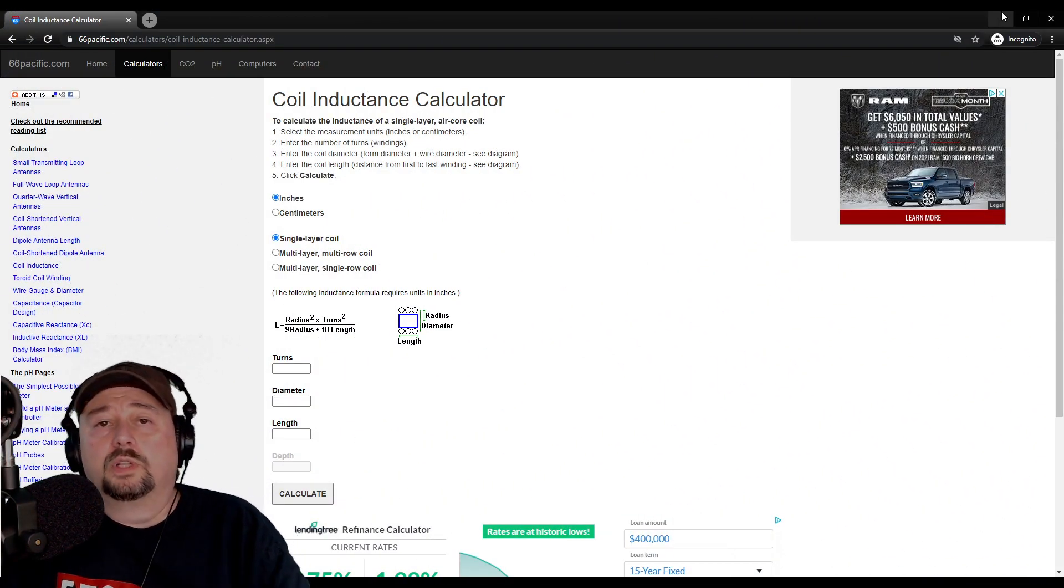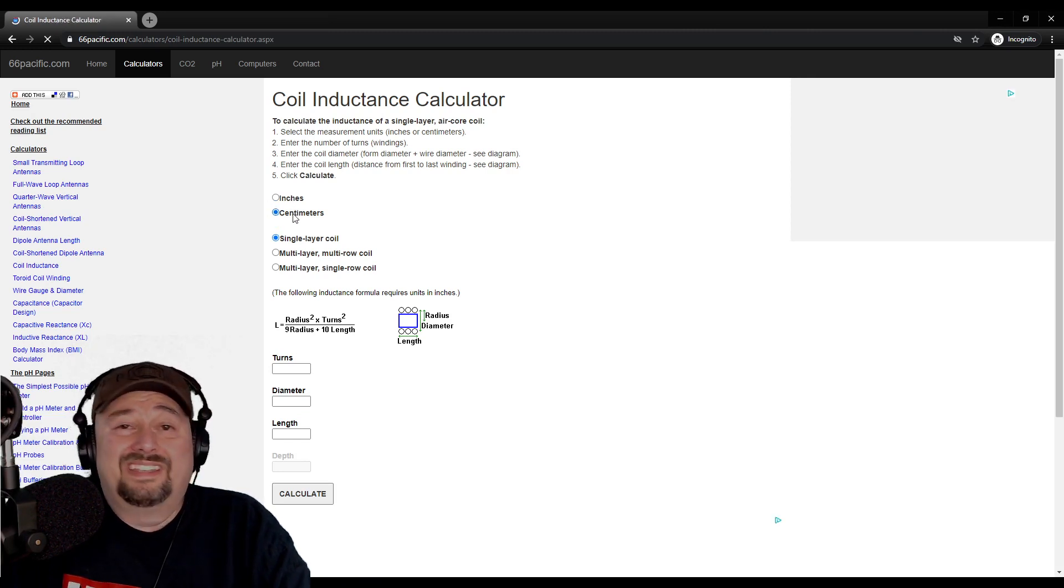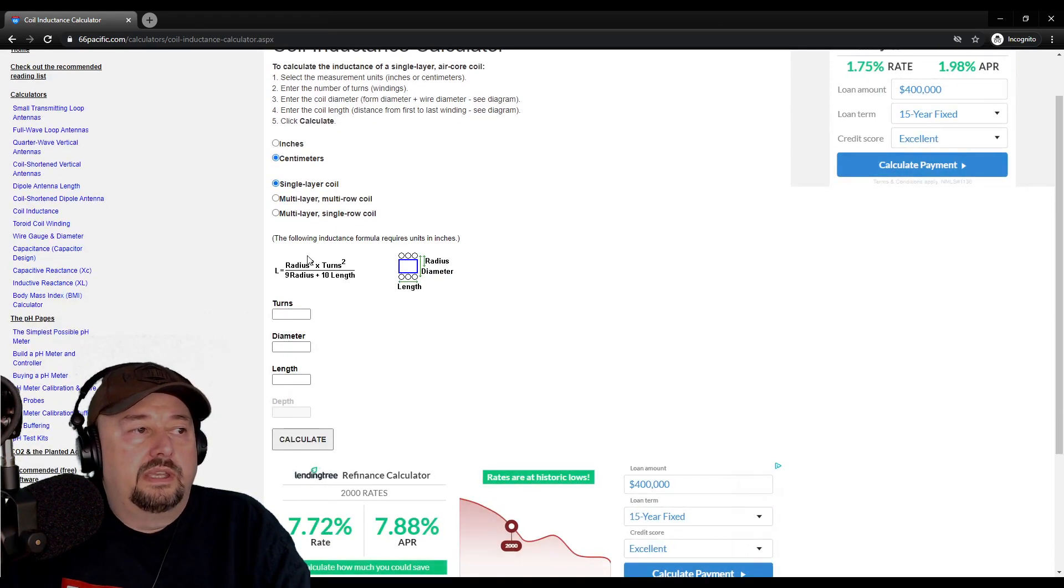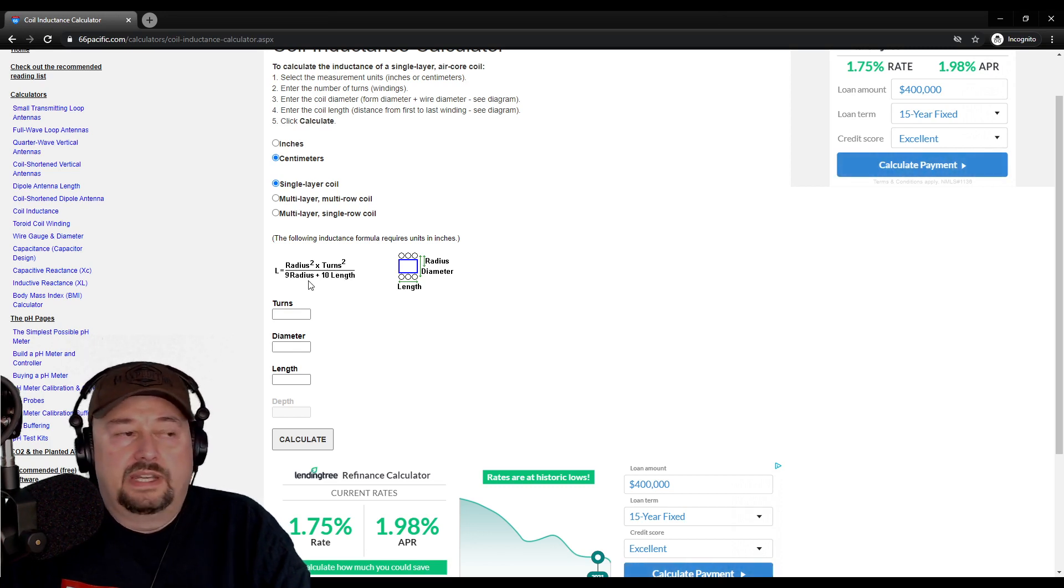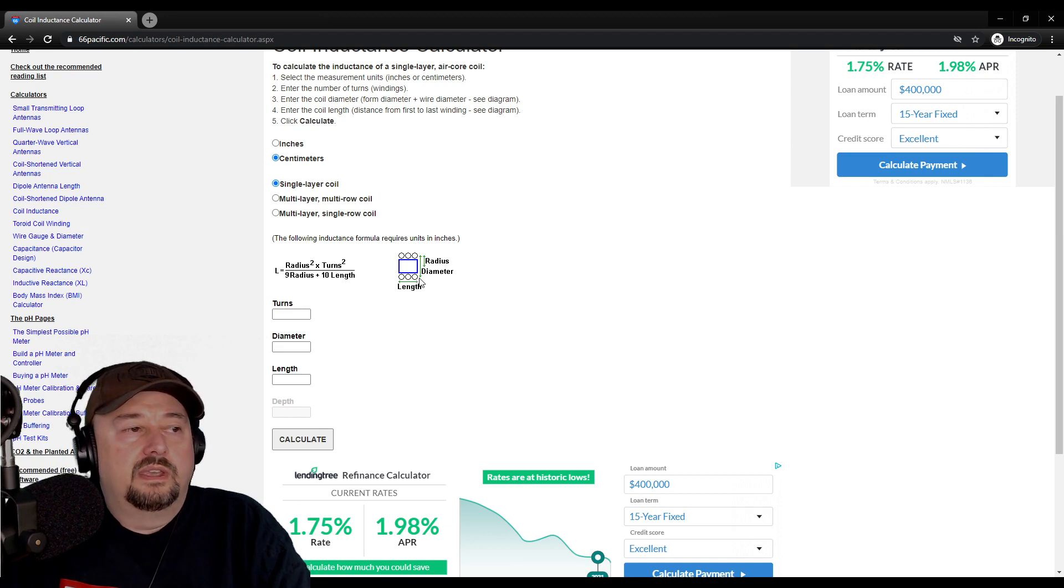So what we have here, and I'll include a link below, is a coil inductance calculator. In here you can set your values to inches or centimeters and we're going to use centimeters. We're going to do a single layer coil. And here's the formula. I wouldn't get too caught up in this formula. It tells you that your inductance will equal the radius squared times turns squared divided by nine times the radius plus 10 times the length. But we don't need to do all that because this calculator figures it out for us.